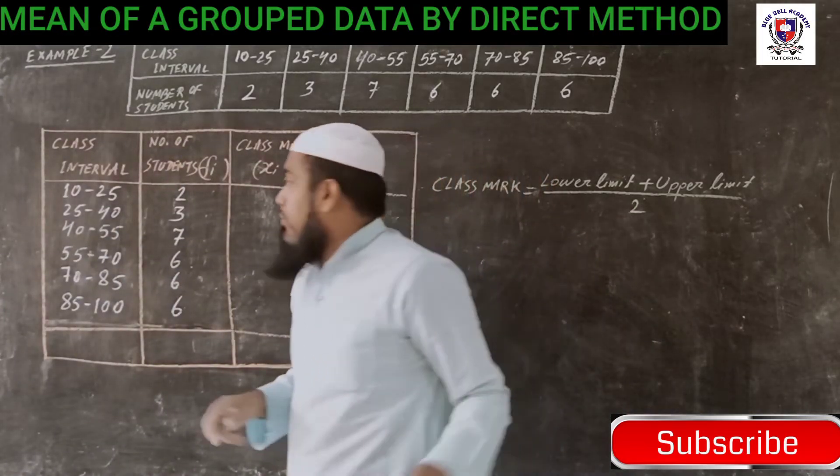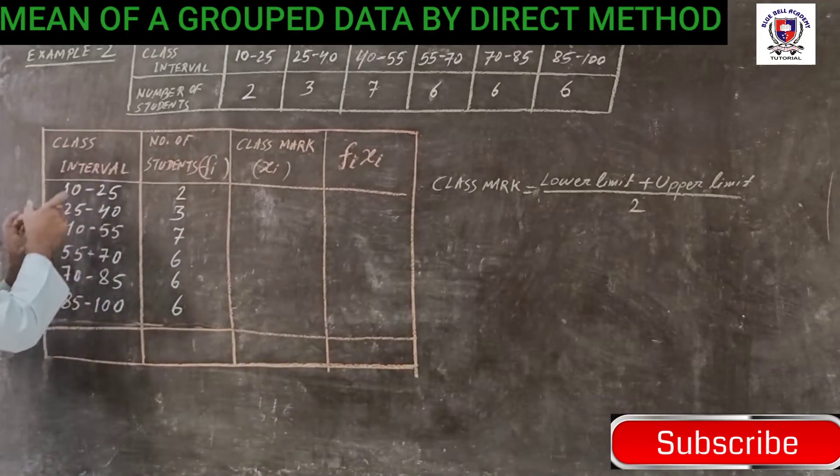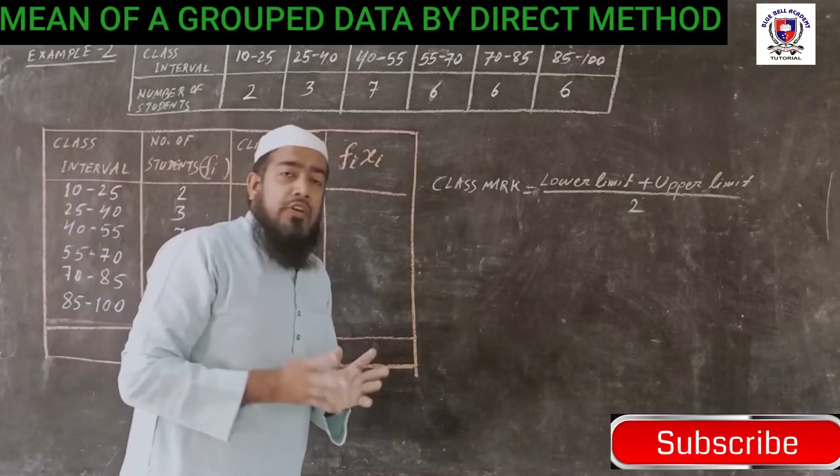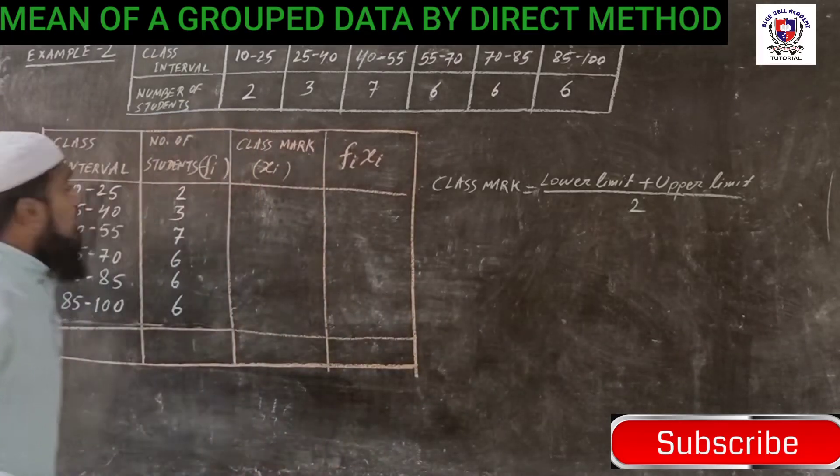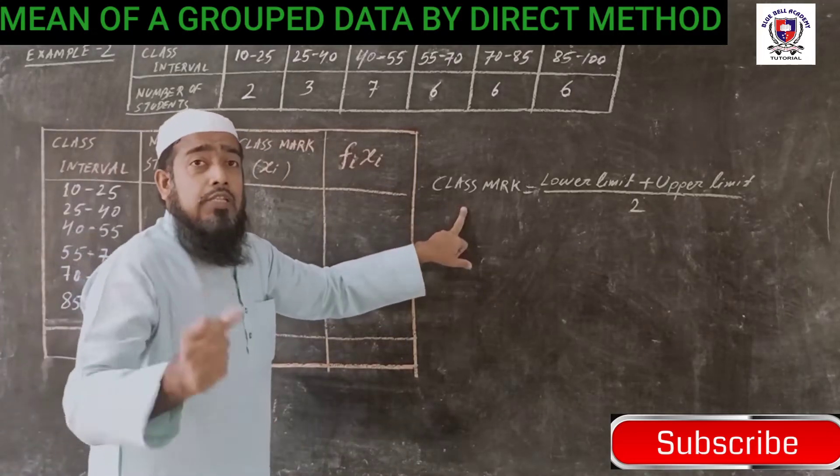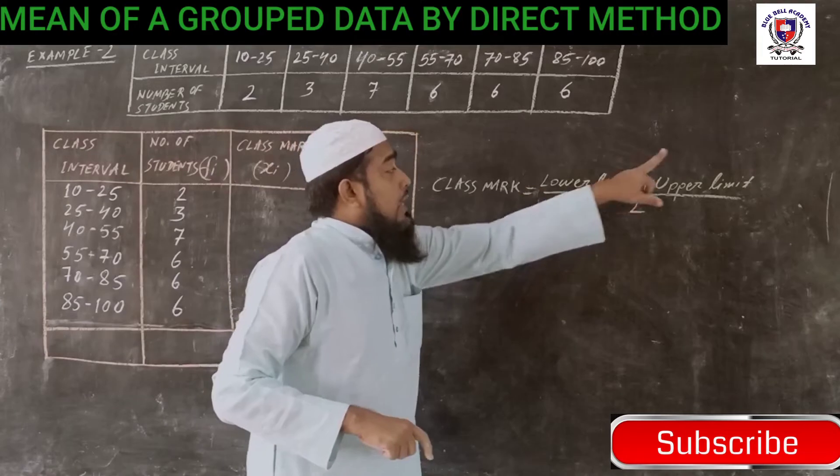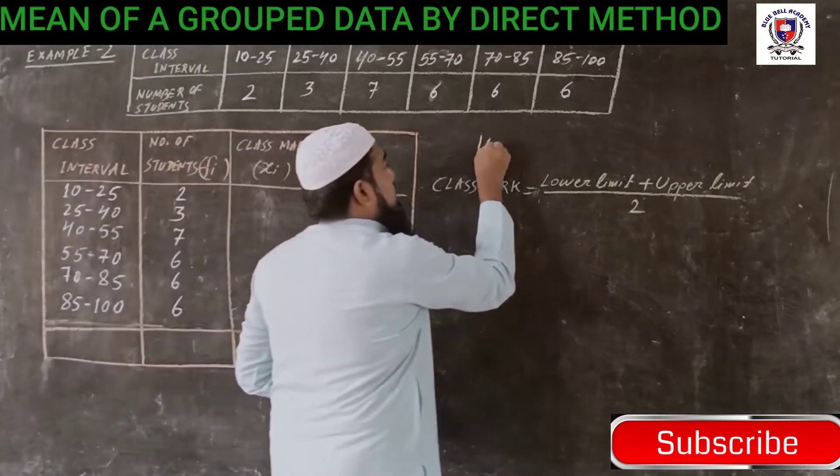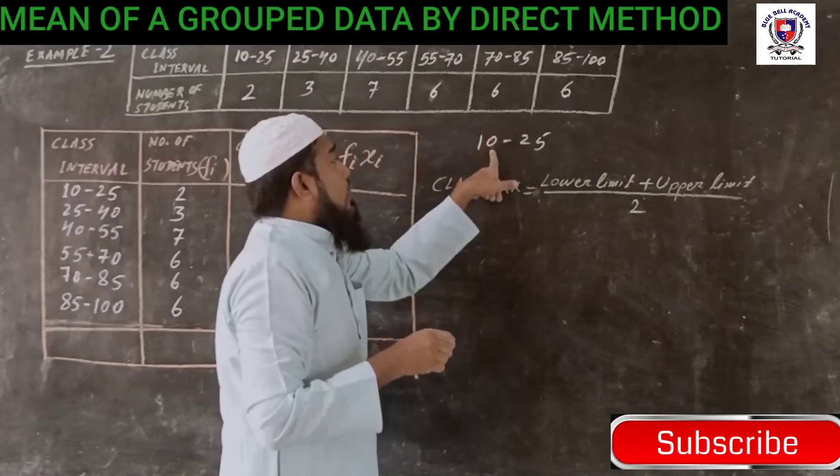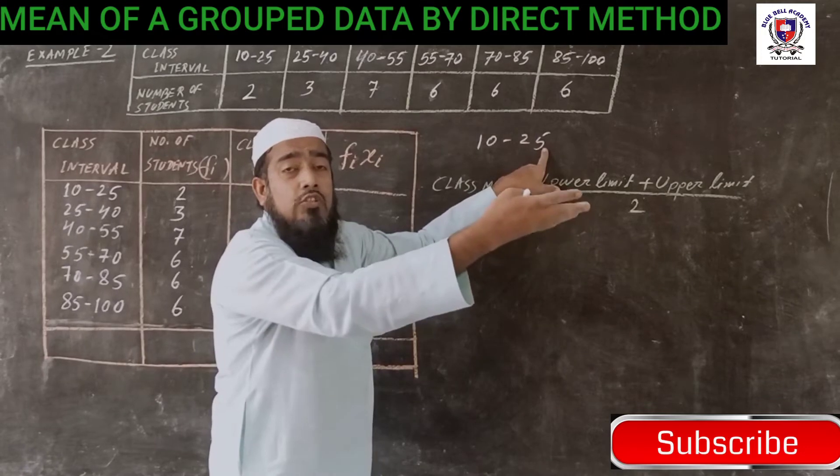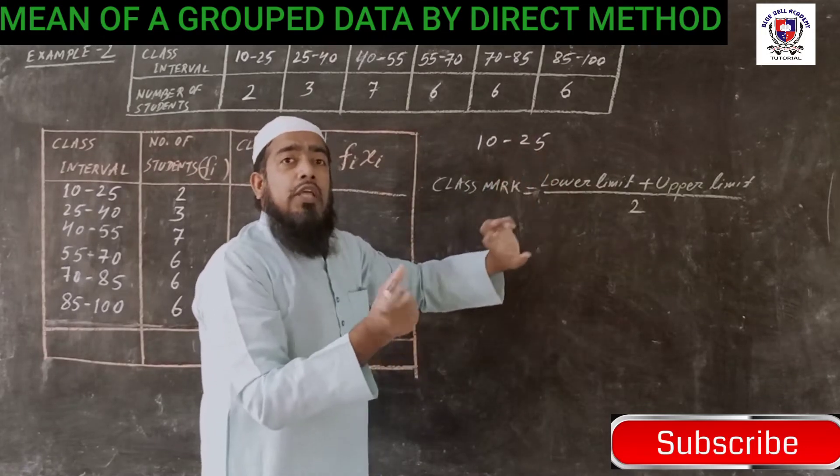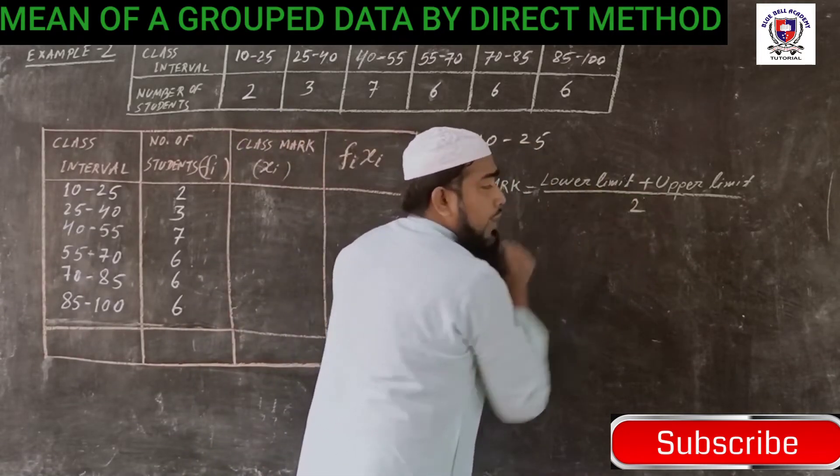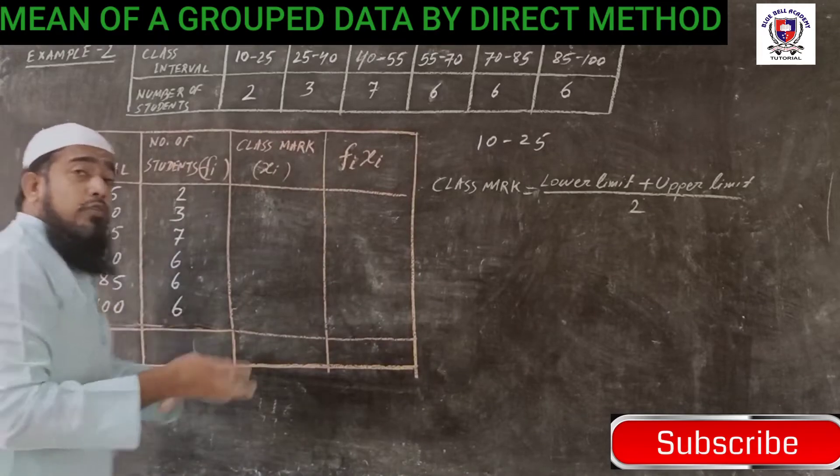Now we need to find out the class mark or xi. Class mark or xi is nothing but the midpoint of each class interval. In your textbook the formula is given: class mark equals lower limit plus upper limit divided by 2. If you see a particular class interval, suppose 10 to 25, this first one is the lower limit and the next one is the upper limit. So we take the average of these two: 10 plus 25 divided by 2, and for each class interval you have to do like this.